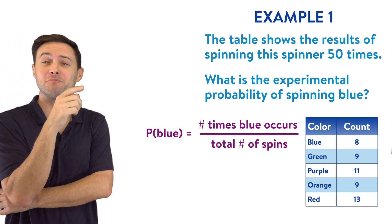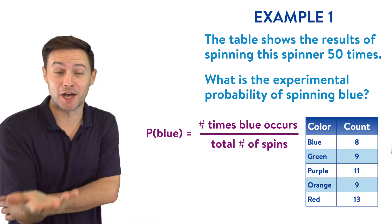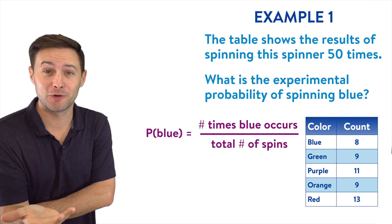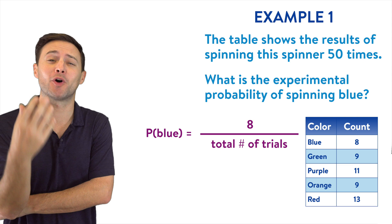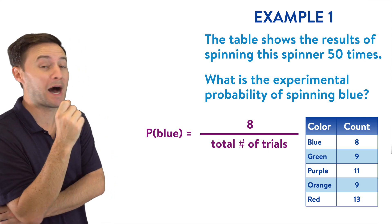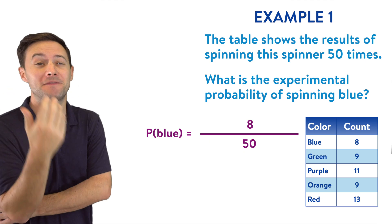The probability of blue, we'll put that in parentheses, is going to be equal to the number of times it landed on blue, which if we look at the table was eight divided by the total number of trials. How many times did we spin the spinner? If you remember, we spun it 50 times.